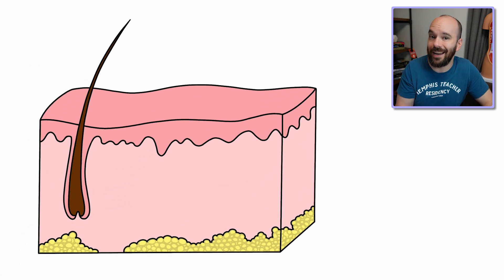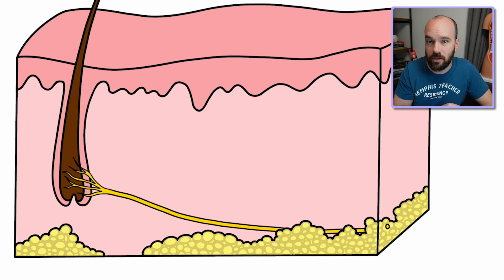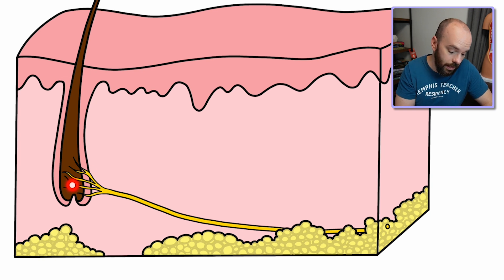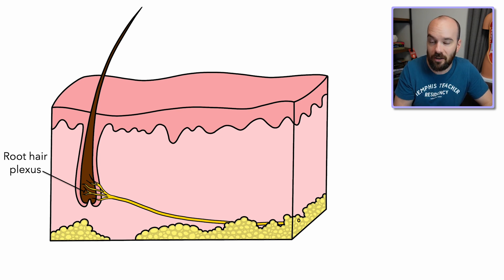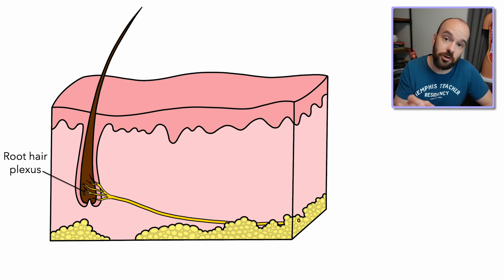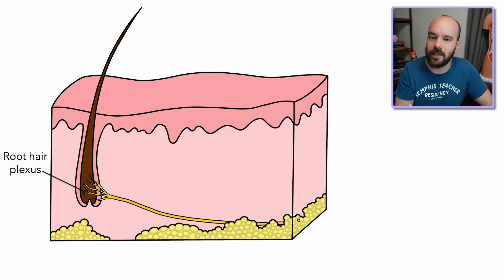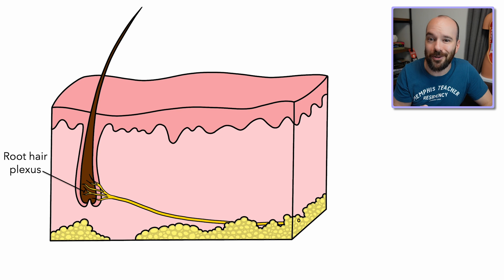Let's jump back to our diagram and start adding receptors. First we need to add a nerve running through our skin, with the different receptors branching off of it. Already drawn on here are some nerve endings wrapping around the hair follicle — this is called a root hair plexus. The term plexus means a branching network of nerves. The root hair plexus detects movement of the hair or pain related to the hair. I'd mainly categorize this as a mechanoreceptor, though it could also be considered a nociceptor due to pain detection.